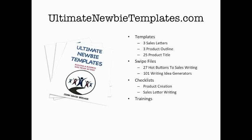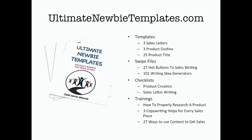There are also two different trainings included. One is on how to properly research a product — that report alone will help you blow your product out of the water and create a stellar, high-value product. This article was actually based off of the last training, which was three copywriting helps for every sales piece. And there's one more: 27 Ways to Use Content to Get Sales. Once you've made the initial sale, you're going to want to get that buyer to buy from you again as soon as possible.